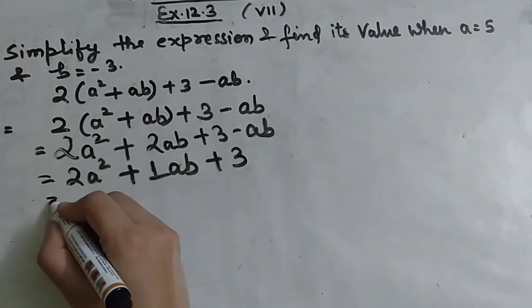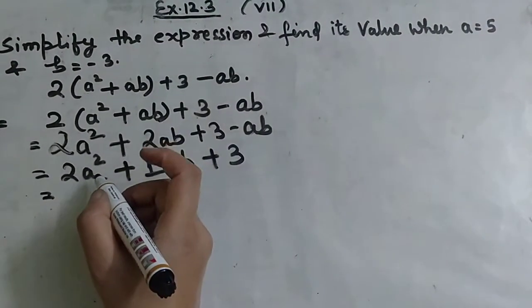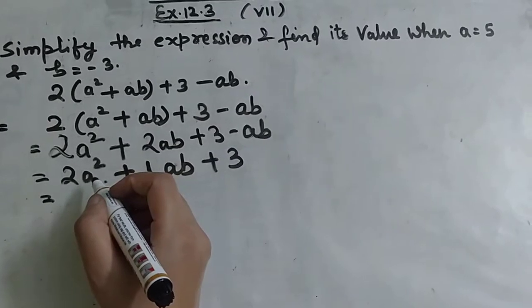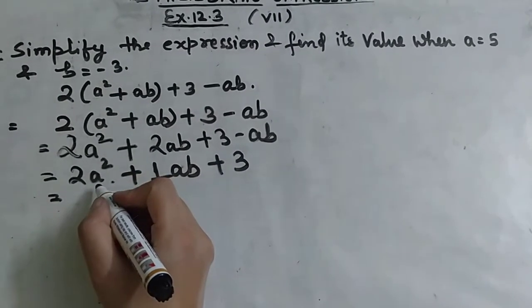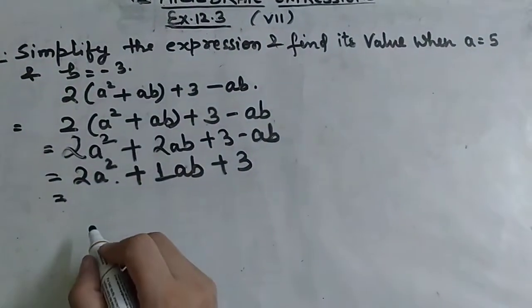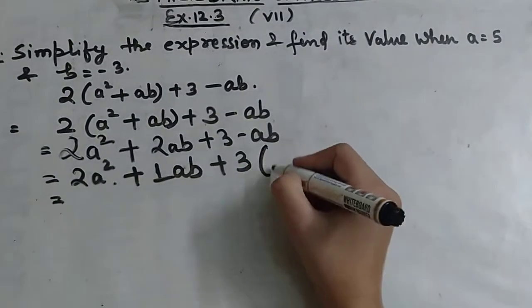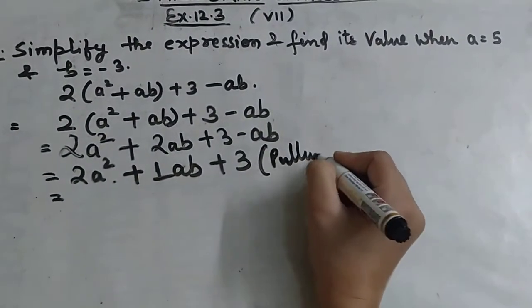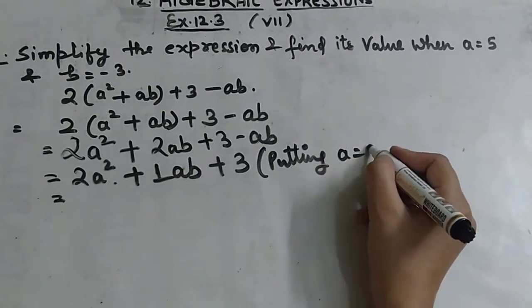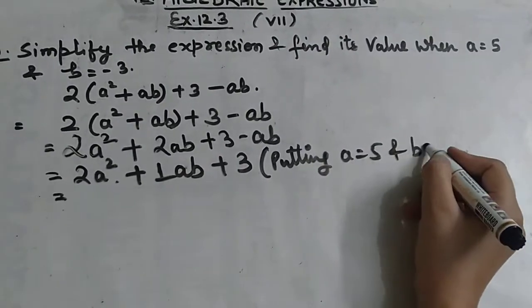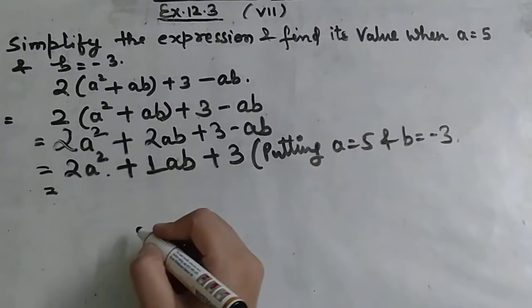Now we have to put the values. A value is 5 and b value is minus 3. So now we put a equals 5 and b equals minus 3.